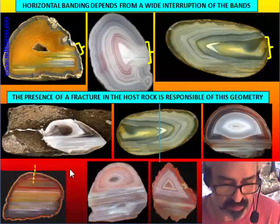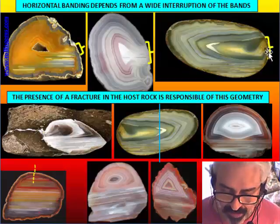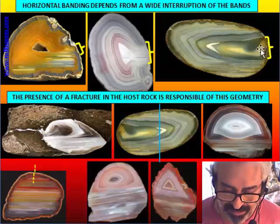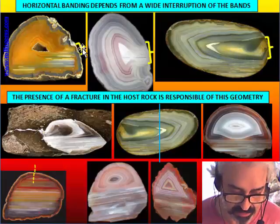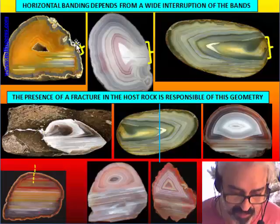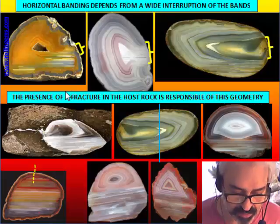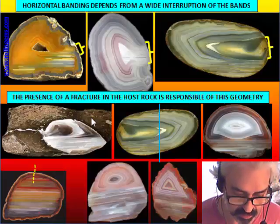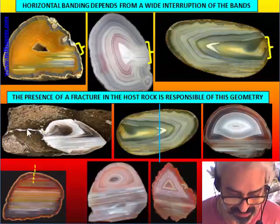We also saw that horizontal banding depends on a wide interruption of the band, and always the interruption of the band lies at the side where the horizontal banding is formed. So there is a correspondence — for example in this nodule — the horizontal banding is on the right side, and this corresponds to the interruption of the band that causes the dilution and the entry of water. What causes the interruption of the band? The interruption is formed where a fracture in the host rock provokes the fast entry of water.